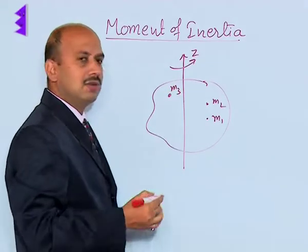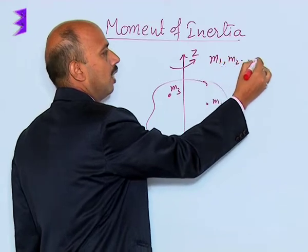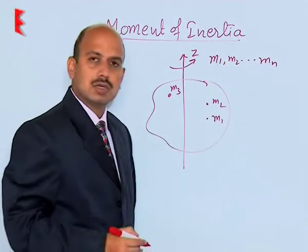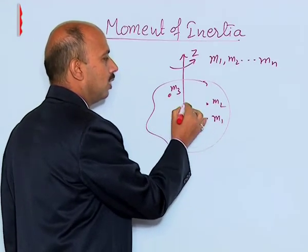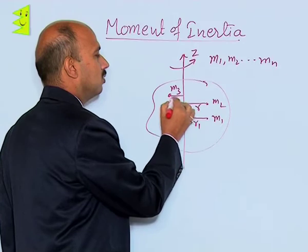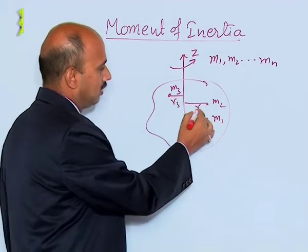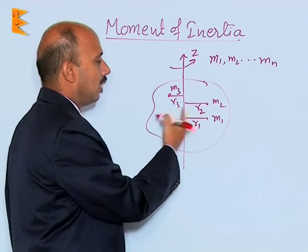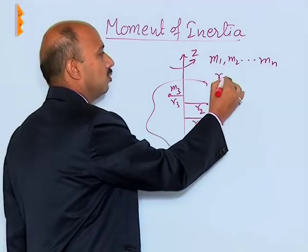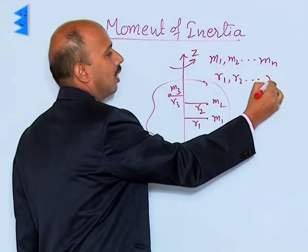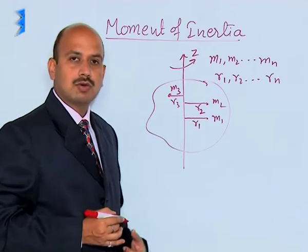So, there are a large number of particles like m1, m2, and mn. These particles are located at distances r1, r2, and r3. Every particle is at distance r1, r2, and r3, which are the perpendicular distances from the axis of rotation. So r1, r2, and rn are the perpendicular distances of the particles from the axis of rotation.